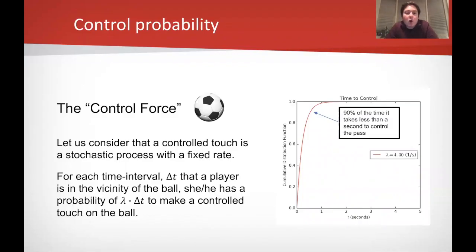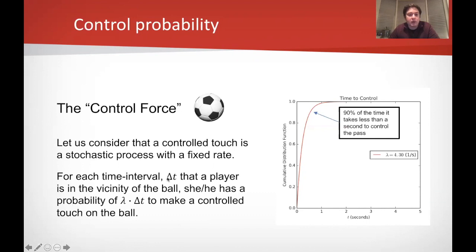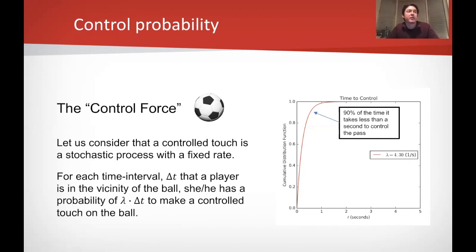We've calculated how long it takes players and the ball to get to the target location, but what about how long it takes a player to actually control the ball? In William's model, players in the vicinity of the ball have, within a given time interval delta t, a probability of controlling the ball of lambda multiplied by delta t, where lambda is a free parameter that determines how quickly footballers tend to control the ball. Will suggests using a value of 4.3 inverse seconds, which is basically saying it typically takes about 0.25 seconds for a player to control the ball.